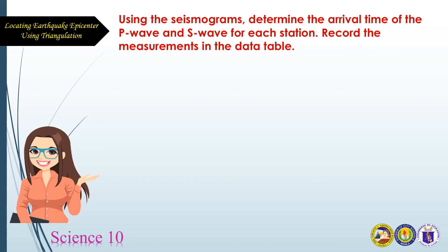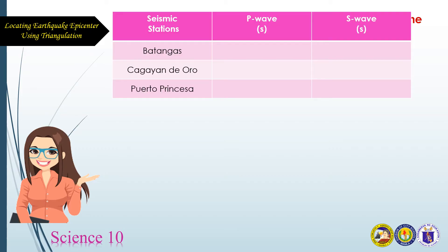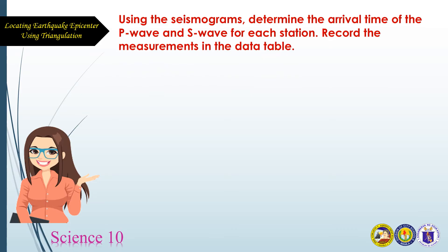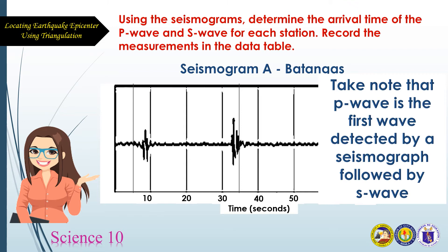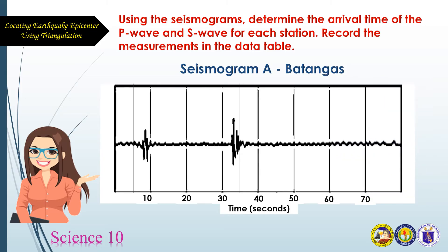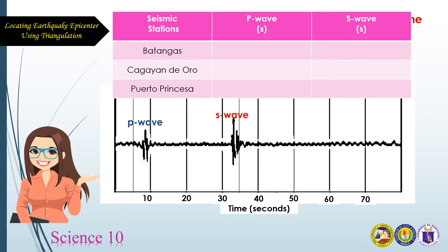Using the seismograms, determine the arrival time of the P wave and S wave for each station and record the measurements in the data table. We have three seismic stations: Batangas, Cagayan de Oro, and Puerto Princesa. Here is seismogram A for Batangas. The P wave is the first wave detected, followed by the S wave, with time in seconds on the x-axis. The hypothetical P wave for Batangas is 8 seconds and the S wave is 34 seconds.